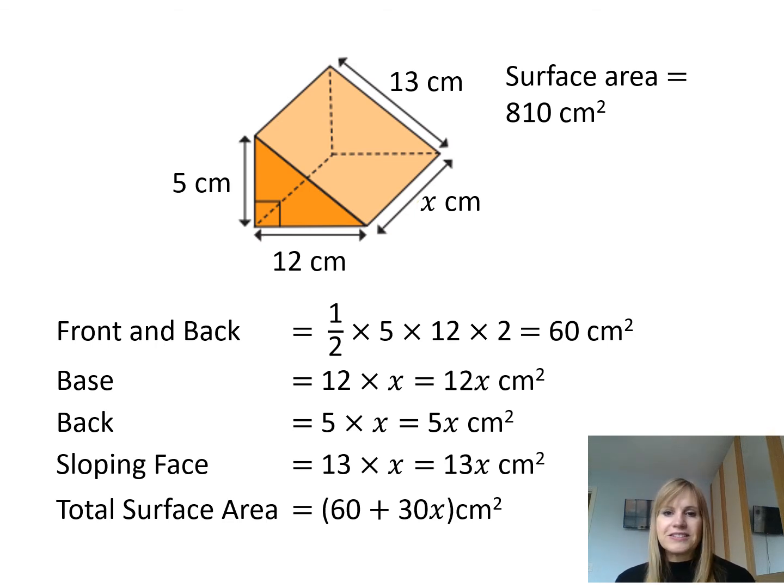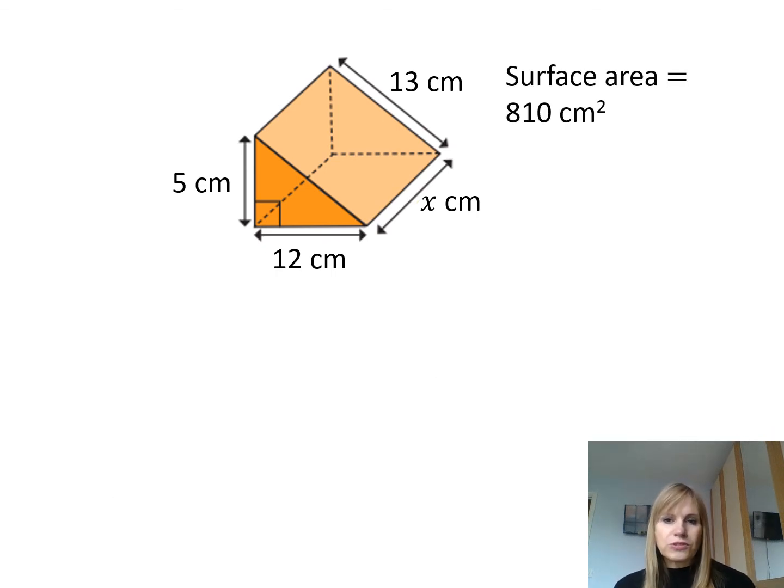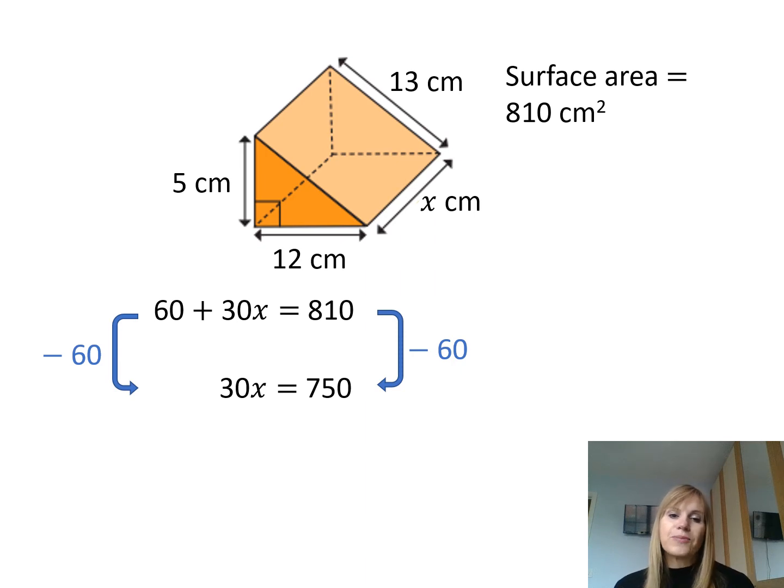Now I haven't finished the question, I still need to work out the value of x, so what I'm going to do is use my answer to form an equation. I was told that the total surface area is 810 centimeters squared and I now know that if I add up all those surfaces I've got 60 plus 30x centimeters squared, so I'm going to form an equation: 60 plus 30x equals 810. Now when you're solving equations you want numbers one side, letters the other, so I need to subtract 60. This gives me that 30x equals 750, and so to find the value of 1x I need to divide by 30. So 750 divided by 30 gives me a final answer of 25, so x equals 25.